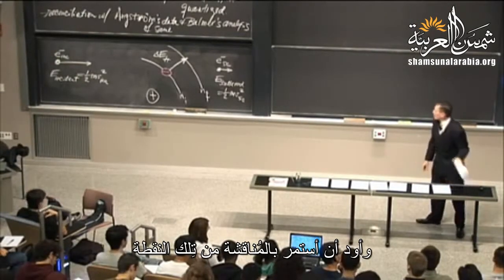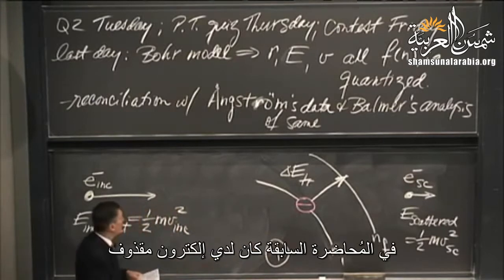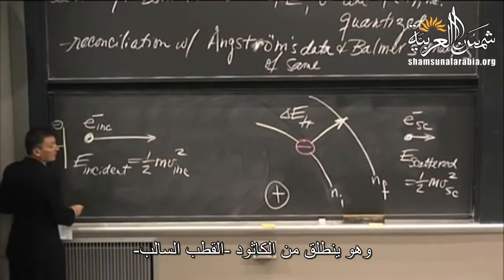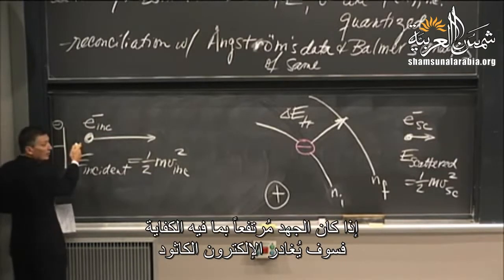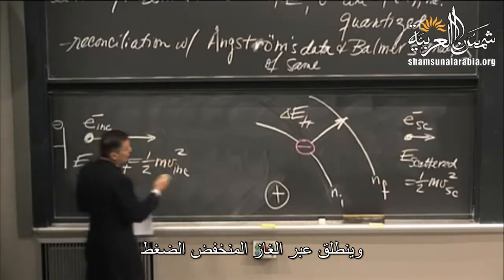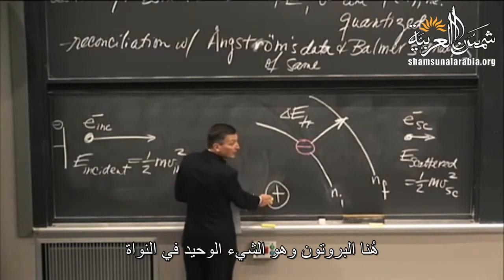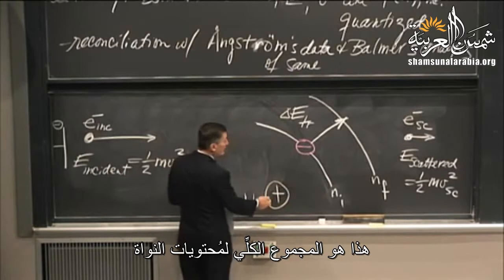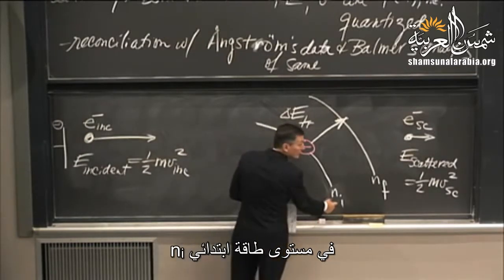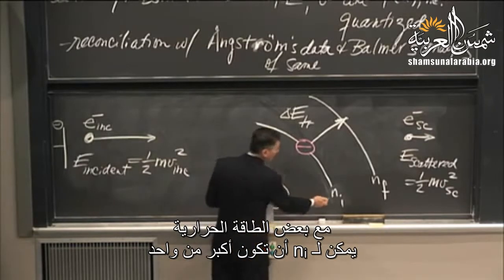I'd like to pick up the discussion at that point. I've done a different drawing of what's going on inside the gas discharge tube. Here's the ballistic electron boiling off the cathode. The cathode is inside the gas discharge tube, and this electron, if the voltage is high enough, will leave the cathode and shoot across this low-pressure gas, which contains atomic hydrogen. Here's the proton, which is the nucleus — the sum total of the nucleus contents — and here's the lone electron orbiting the nucleus at some initial value n_i. Could be ground state; with some thermal energy, this could be n greater than 1.